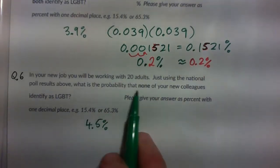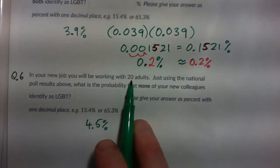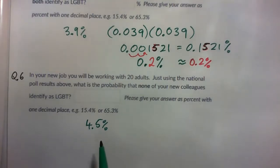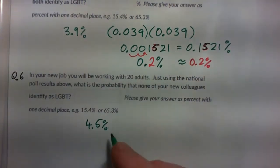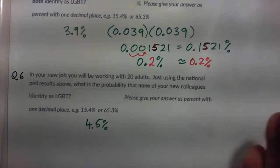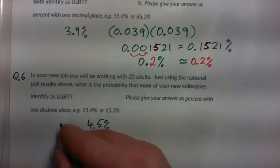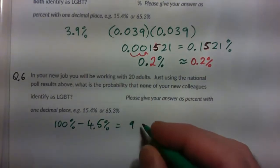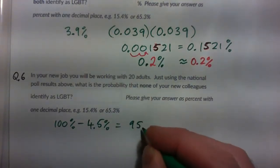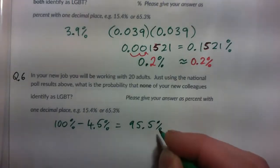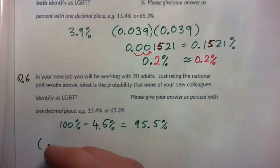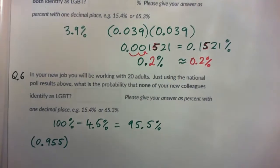What's the probability none of the 20 adults identify as LGBT? The 4.5% is the probability that an adult does identify. The probability that an adult does not identify is 100% minus 4.5%, which is 95.5%. So the probability that one adult does not identify is 0.955.